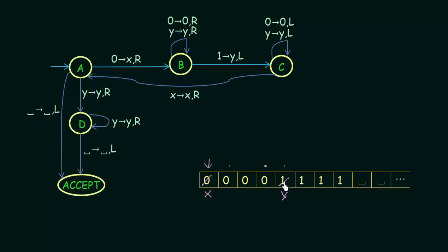State C will take you left without replacing anything different — if you see a zero you write a zero, if you see a Y you write a Y — basically not replacing anything, just moving left. You keep moving left until you encounter an X. When you reach an X, you understand that the leftmost zero follows it. So when you encounter the X, you move one step to the right, and your tape head is now over the leftmost zero. Then you come back to state A.